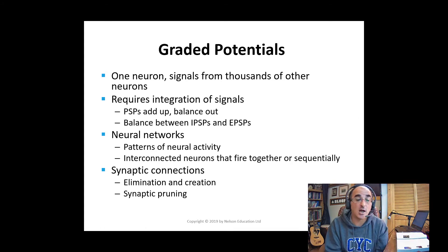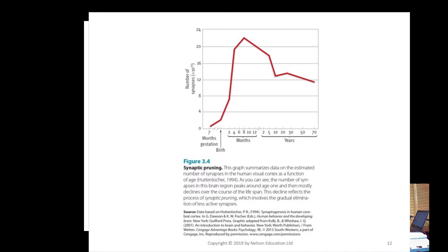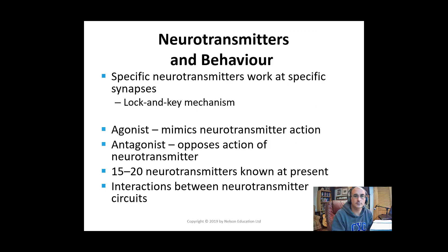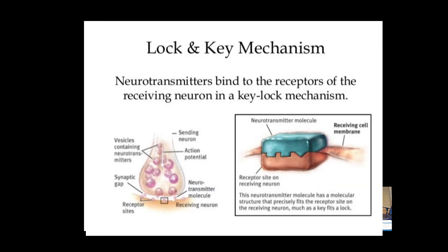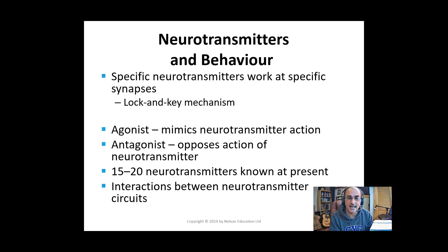The links in these networks are constantly changing, with synaptic pruning — the elimination of old or unused synapses — playing a larger role than the creation of new synapses in sculpting neural networks. For example, the number of synapses in the human visual cortex begins to decline after the age of one year. Neurotransmitters deliver their messages by binding to a receptor site in a lock-and-key manner — there must be a perfect fit between the shape of the neurotransmitter and the shape of the receptor site.